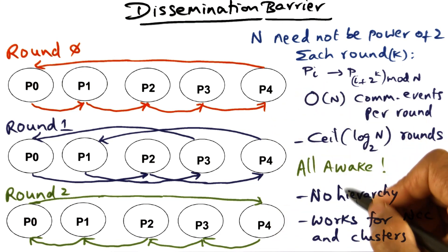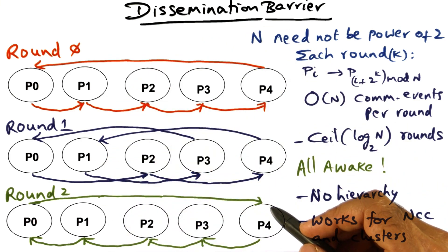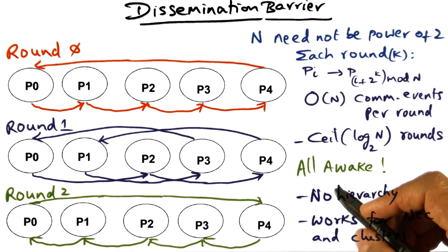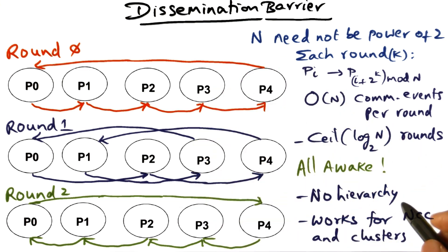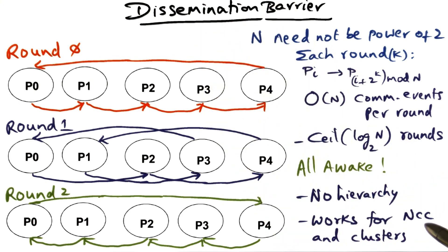So now let's talk about some of the virtues of the dissemination barrier. The first thing you'll notice is in the structure there is no hierarchy. In the tree algorithms, the root of the tree automatically gives you a hierarchy in terms of the organization. In the dissemination barrier there is no such thing. And I already mentioned that this algorithm works for both NCC NUMA machine as well as clusters.